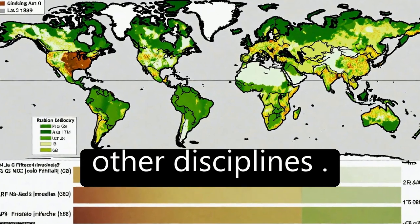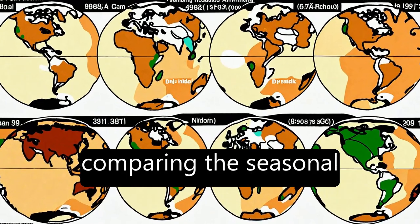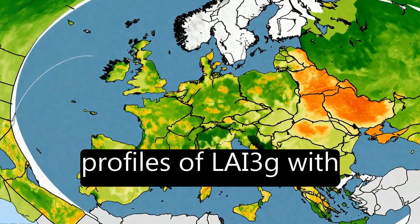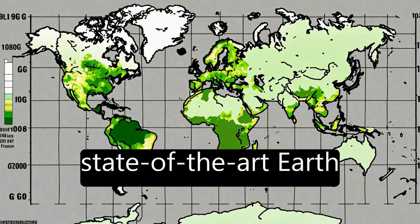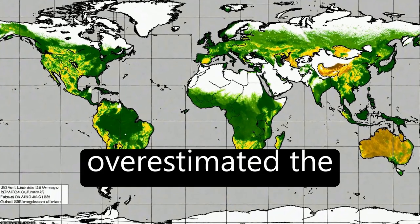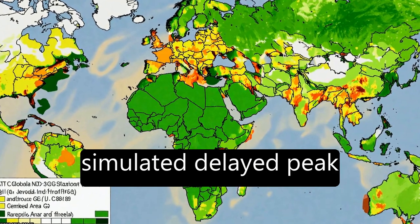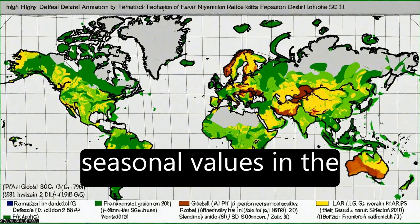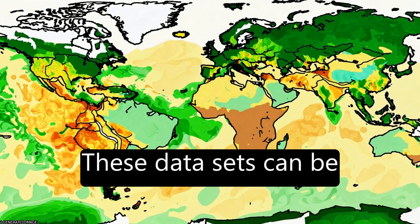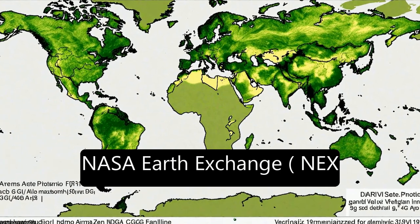These assessment efforts attested to the suitability of these data sets for research use in other disciplines. The utility is documented by comparing seasonal profiles of LAI-3G with profiles from 18 state-of-the-art Earth system models, which consistently overestimated satellite-based estimates of leaf area and simulated delayed peak seasonal values in the northern latitudes. These data sets can be obtained freely from the NASA Earth-exchange NEX website.